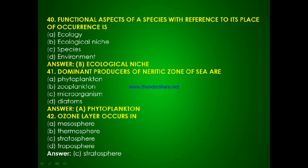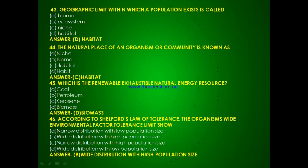Question 40: Ozone layer occurs in — mesosphere, thermosphere, stratosphere or troposphere? The answer is C, stratosphere. Question 41: Geographic limit within which a population exists is called — biome, ecosystem, niche or habitat? The answer is D, habitat.